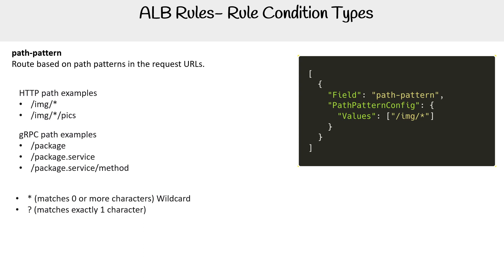So we'll get our pen out. We have path pattern config and provider values. Again, this is after the address — imagine there is the full URL address prior to this, and then it's on the end of your URL.